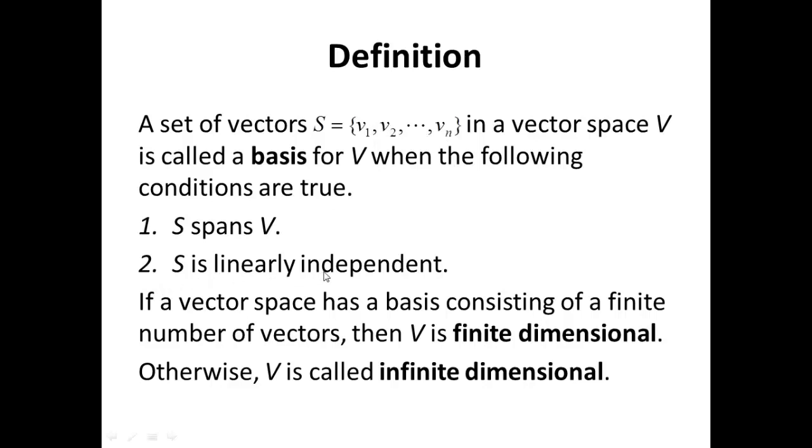We know what that means again. That means whenever summation alpha_i V_i, i from 1 to n equals 0, the alpha_i's must be equal to 0.